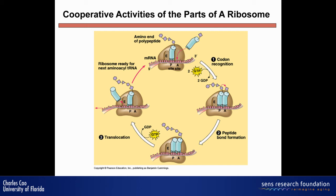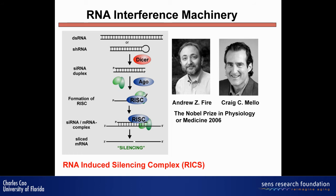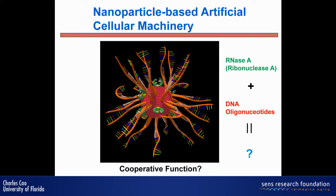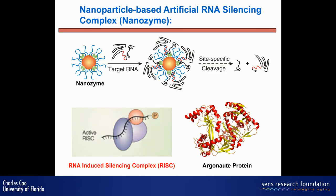Another thing we want to learn from nature is RNA interference — specifically the RNA-induced silencing complex, or RISC. This silencing complex can degrade RNA selectively. What we do is mimic this structure: on the surface of particles, we put RNase — a very robust enzyme that can degrade RNA non-sequence-specifically and very quickly — and we put DNA of complementary types. Because the two species have no reaction with each other individually, the question is: can we have a cooperative function?